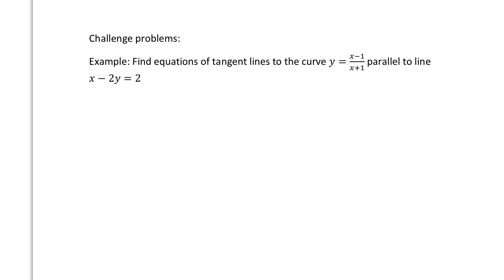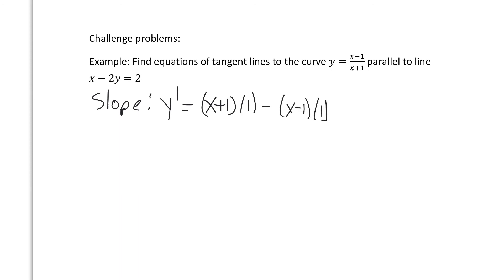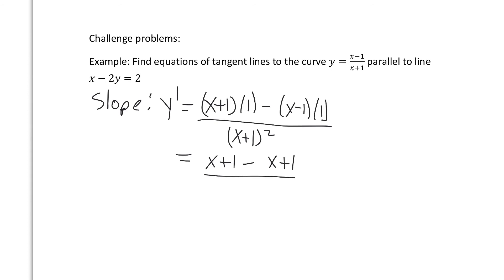Here's a problem with tangent lines: find equations of tangent lines to the curve that are parallel to a given line. To find tangent lines, we need a point and a slope — let's find the slope first by computing y prime using the quotient rule. Low d high, less high d low over the denominator squared. Simplifying gives x plus 1 minus x plus 1 over x plus 1 squared, and the x's cancel, giving y prime equals 2 over x plus 1 squared.